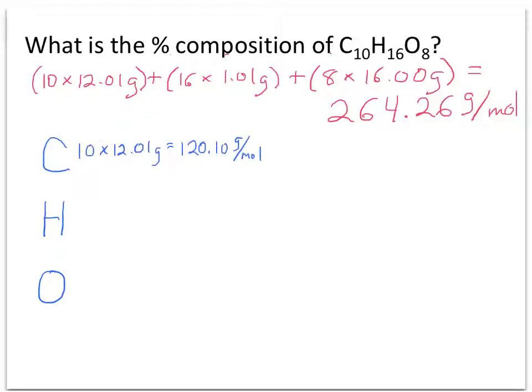10 carbons adds up to be 120.10 grams per mole. So for carbon, its part is 120.10 versus the whole of the compound, which is 264.26. When we multiply that times 100, we get the percentage of carbon, and that's 45.4%.